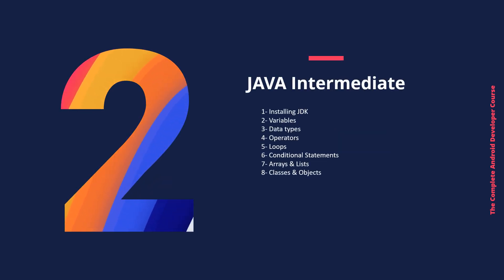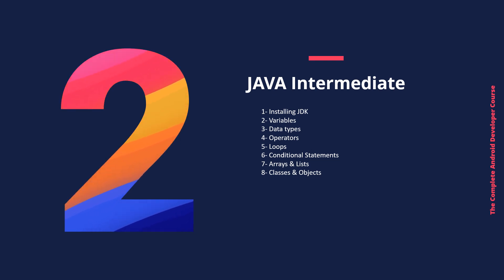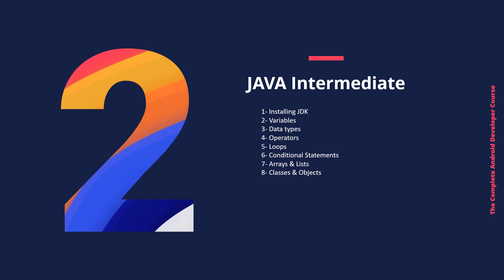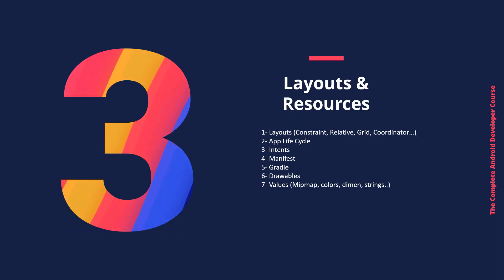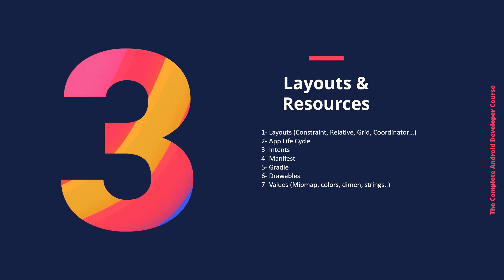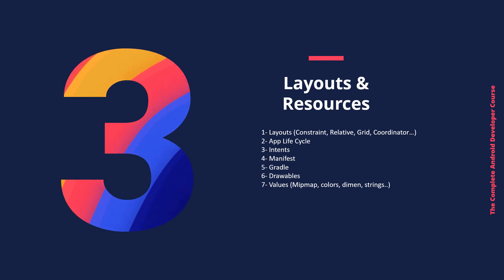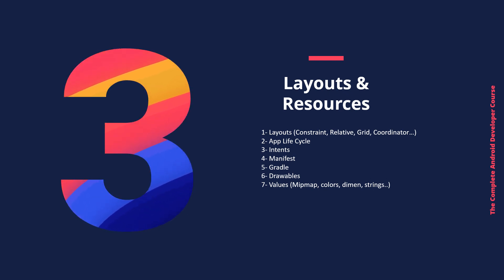The second step covers Java intermediate topics: installing the JDK, variables, data types, operators, loops, conditional statements, arrays, lists, classes, and objects. The third step covers layouts and resources including constraint, relative, grid, and coordinator layouts, app lifecycle, intents, manifests, and Gradle.